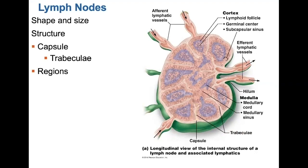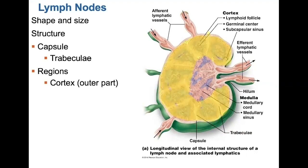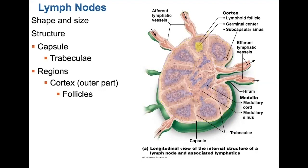There are two distinct regions within the lymph node. The outer cortex makes up four-fifths of the node. In the superficial area of the outer cortex, you will find primarily B lymphocytes, and in the deeper area of the cortex, T lymphocytes. Follicles are a type of lymphoid tissue found in the superficial region of the cortex, and they consist of B lymphocytes.